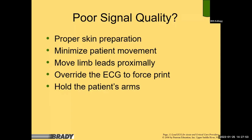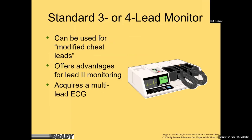Sometimes the 12-lead machine will pop up saying 'too much artifact' and won't generate a printout. If you override and force print, the computer algorithm reading will not be accurate. If a patient has Parkinson's, you can put a little general traction on their arms and the tremors will stop — that makes a big difference for getting a clean tracing.